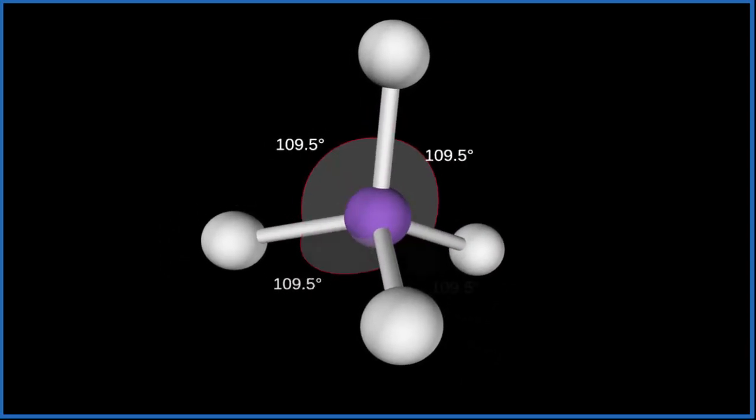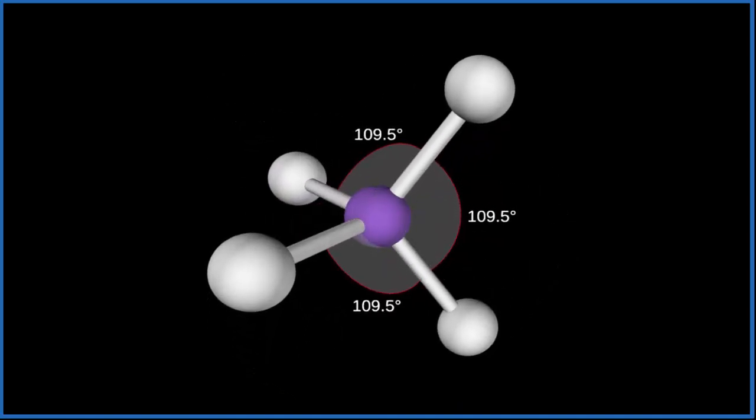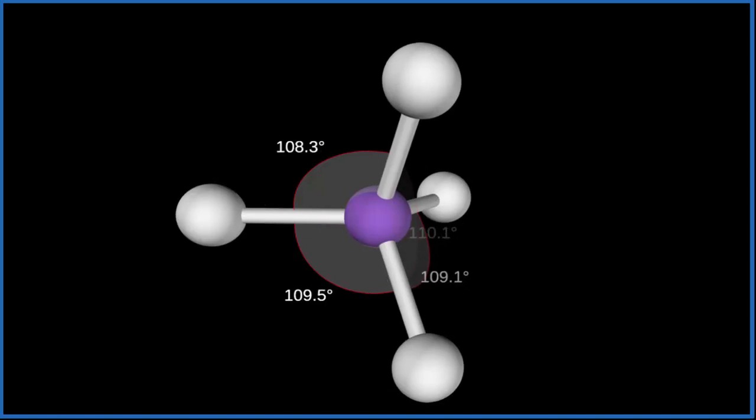The bond angle will be 109.5 degrees. If we want to look at the electron geometry, it's also 109.5 degrees, it's tetrahedral, because we don't have any lone pairs. So the molecular geometry for CH4 is the same as the electron geometry.